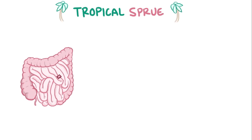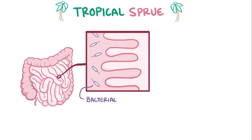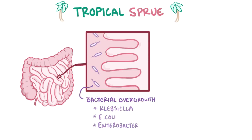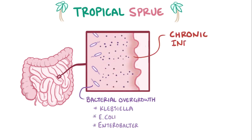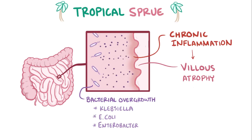To recap: tropical sprue is a gastrointestinal disease thought to be the result of bacterial overgrowth, most commonly of Klebsiella, E. coli, and Enterobacter species. These bacteria release toxic substances as they ferment food in the small intestines, which can lead to chronic inflammation and subsequent flattening of the small intestinal villi, which ultimately results in malabsorption and the related abdominal symptoms.